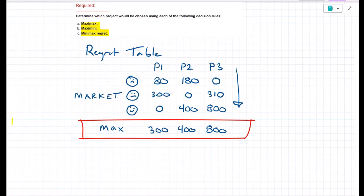Now that we found the maximum regret for each option, we want to choose the project that minimizes that maximum regret. And I see the smallest number of the regret row is 300. So following minimax regret, I would choose project one.